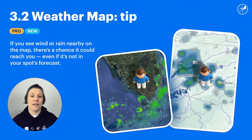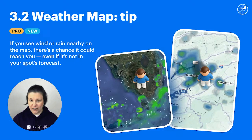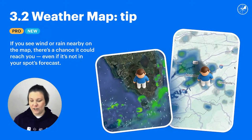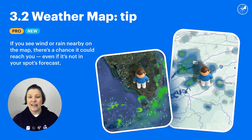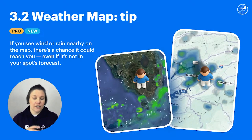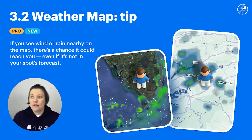Another tip for the weather map: weather forecasts are getting better, but what they have trouble with is the spatial position of local winds and local precipitation. What I mean is — if you don't see rain or wind in the forecast for your spot, but you open the map and see that there's wind and precipitation somewhere close to you, then you should expect it could happen at your spot also. Because the forecast can easily be off by 10 kilometers, and that can make all the difference.